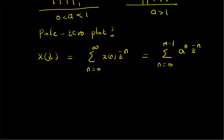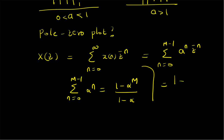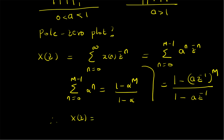By comparing this summation to the finite geometric series — the sum from n=0 to M-1 of α^n equals (1 - α^M) / (1 - α) — here α is basically a·z⁻¹. So the z-transform becomes (1 - a·z⁻¹)^M divided by (1 - a·z⁻¹). Therefore, the z-transform of the given signal is X(z) = (1 - a·z⁻¹)^M / (1 - a·z⁻¹).